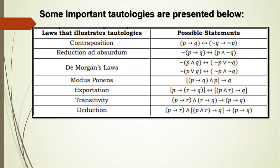Some important tautologies are presented below. Laws that illustrate tautologies and their possible statements: 1. Contraposition, 2. Reduction and Absurdum, 3. De Morgan's Laws, 4. Modus Ponens, 5. Exportation, 6. Transitivity, and 7. Deduction.